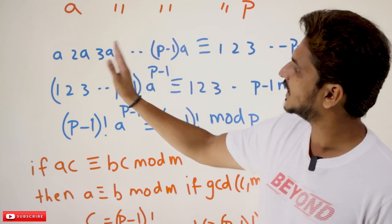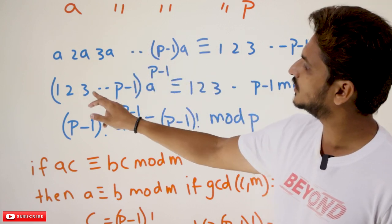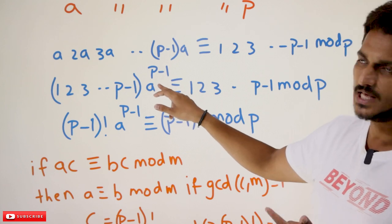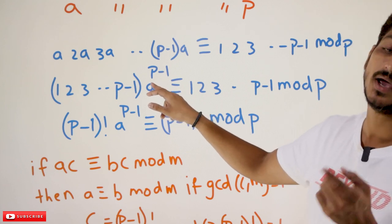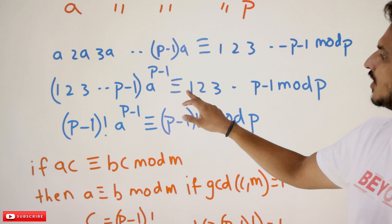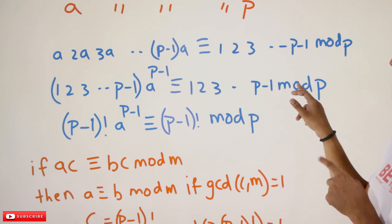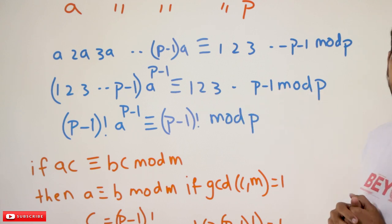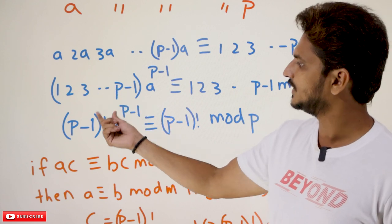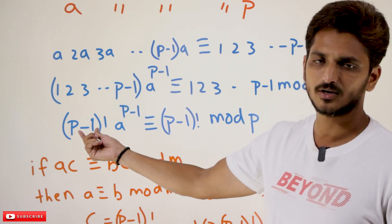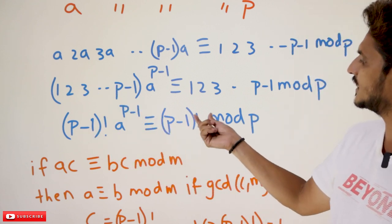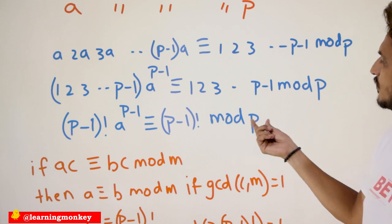Now, take a common: 1 × 2 × 3 × ... × (p-1). How many a's are there? There are (p-1) a's, so we get a^(p-1) congruent to 1 × 2 × 3 × ... × (p-1) mod p. This can be written as: (p-1)! × a^(p-1) ≡ (p-1)! (mod p).